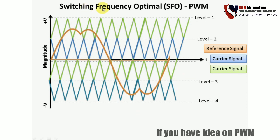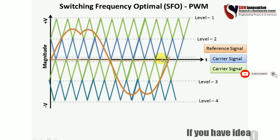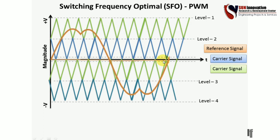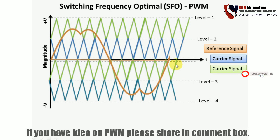Now, the switching frequency optimal (SFO) PWM technique uses APOD-style carrier signals with a modified sinusoidal reference that appears as an MW-type (slightly flattened) waveform. This technique is used for over-modulation — when the inverter's reference signal magnitude is at maximum. If you want to operate at a modulation index of 0.8, this technique allows you to extract maximum power and maximum voltage output from the inverter.